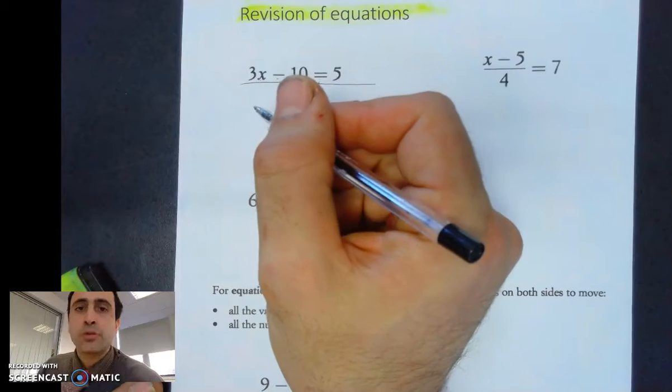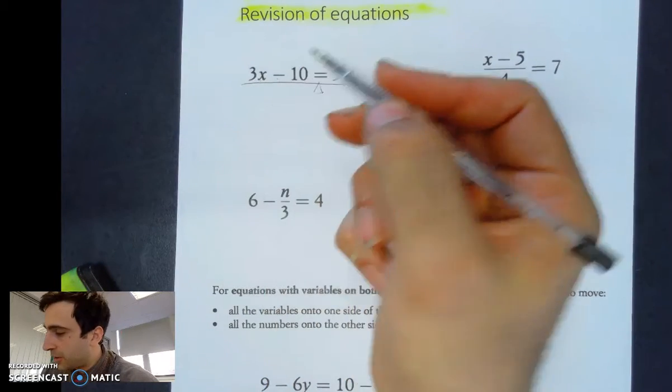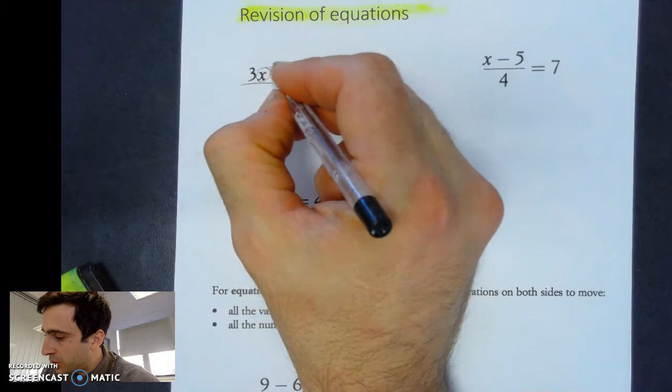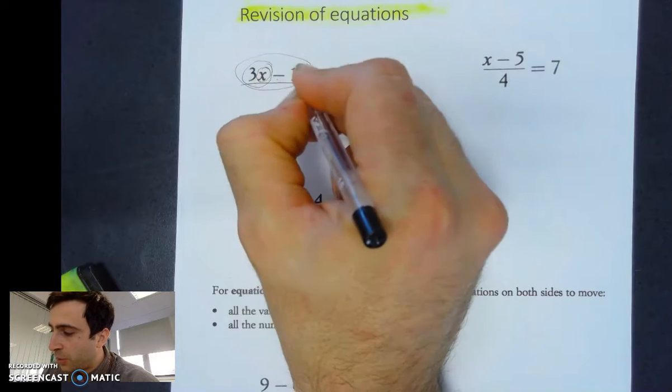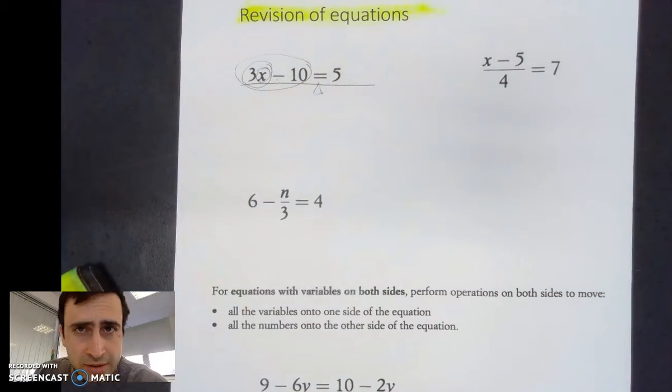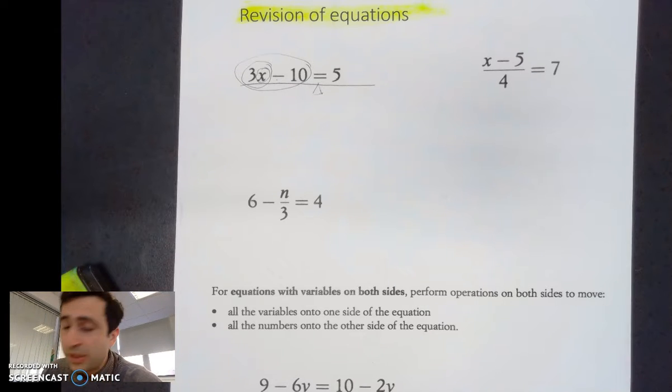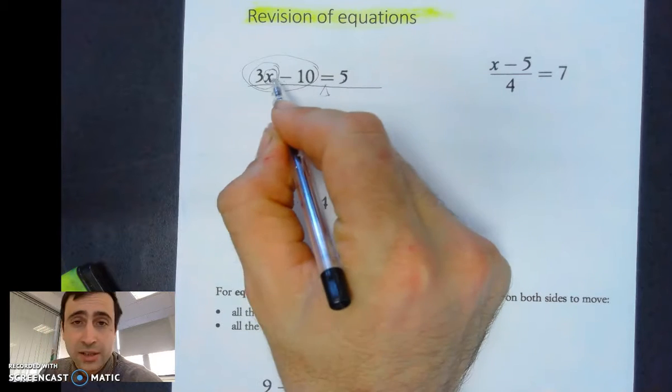The easiest way I think is to have a look and say what's closest to the x. If we want to get to the x, we have to peel off all these layers. Like ogres, equations are like onions - they have layers and we need to peel those layers off to get to the x underneath.